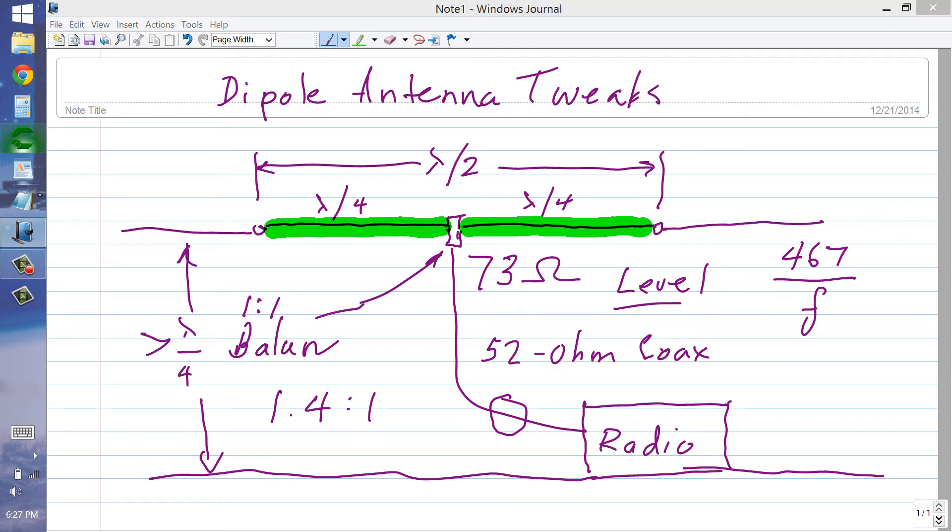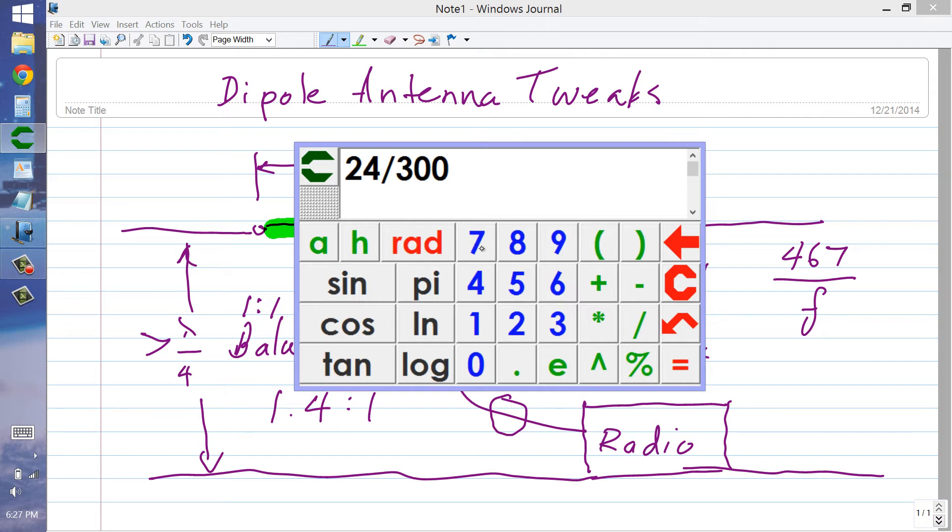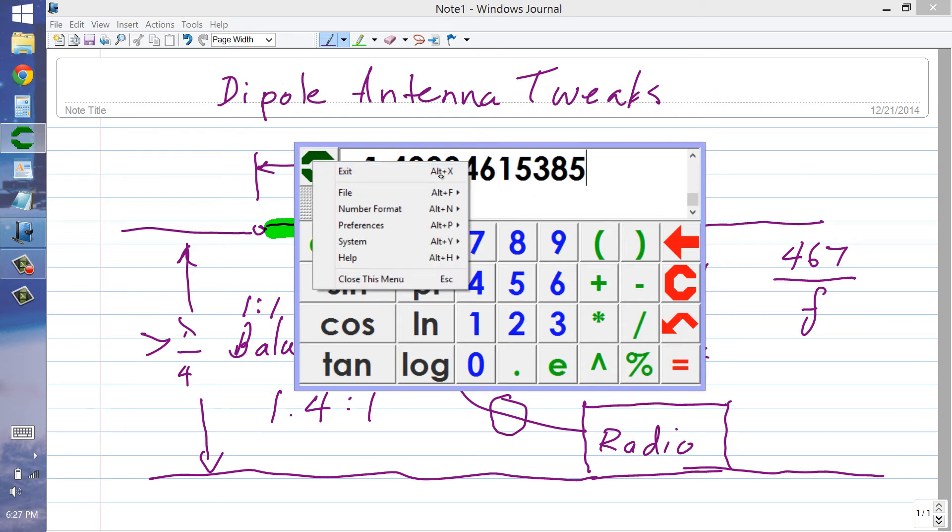We can go ahead and divide and let's find out: 73 ohms divided by 52 ohms. You'd expect it to be about 1.4, not 1 to 1.